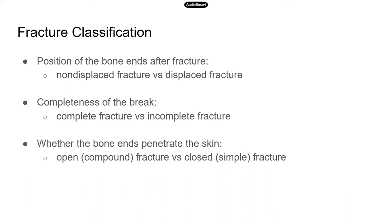Before we take a closer look at the steps in bone repair, we're going to go through the different types of fractures real quick. There are different ways to classify fractures — for instance, fractures can be described in terms of the location, the nature of the break, or what the fracture looks like. Because this is a topic that probably won't be on the TEAS, we're just going to look at some of the general common classifications.